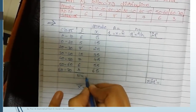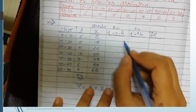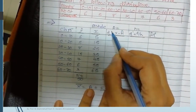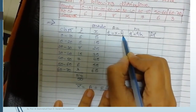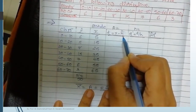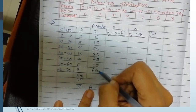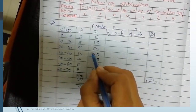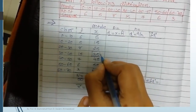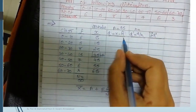The total of frequency N equals 50. Now to find the deviation d, we use d equals x minus capital A, where A is the assumed mean. You can assume any value from the x values, but the mid — the center-most value — is preferred. So I select A as 35.